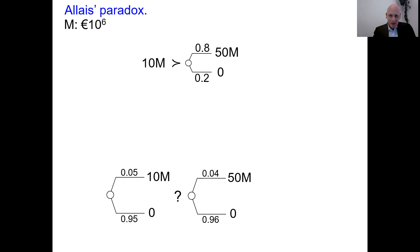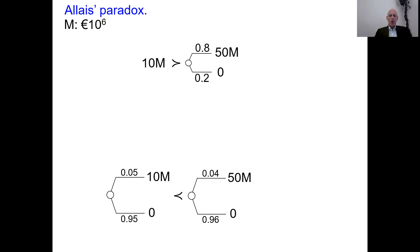Now the majority preference is for the right option. People often say the probabilities are not so very different, but in the right option you get 50 million, which is much more than 10 million — that's why they prefer the right option. These are the two majority preferences. They may seem plausible, but I'm claiming they are irrational.